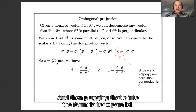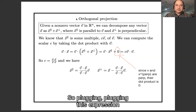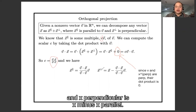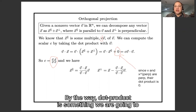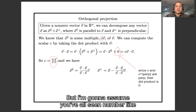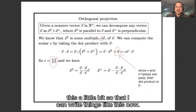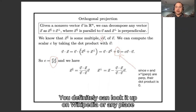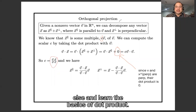Plugging that c into the formula for X-parallel, we see that X-parallel is this scalar multiple of V, and X-perpendicular is X minus X-parallel. By the way, dot products are something we're going to seriously study in chapter five, but I'm assuming you've all seen them at least a little bit. If not, you can look them up on Wikipedia to learn the basics.